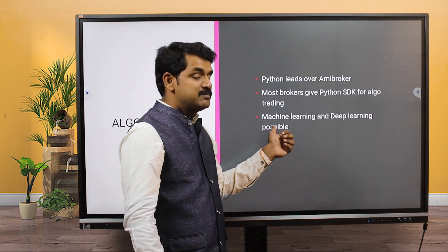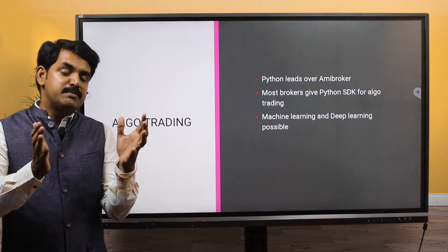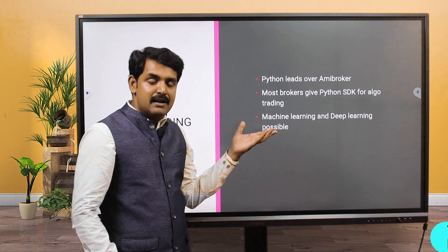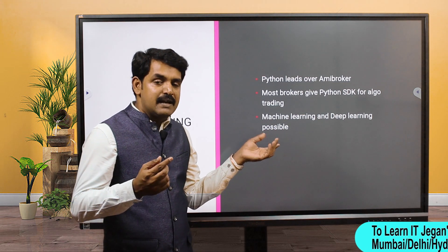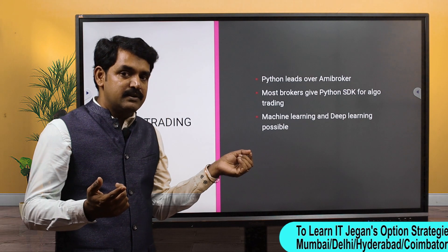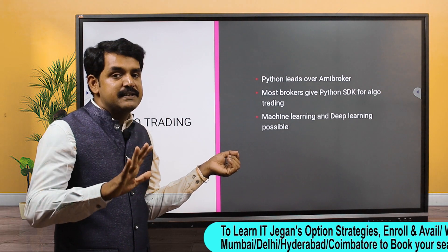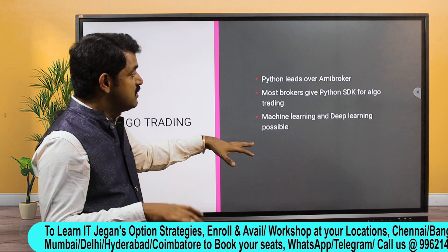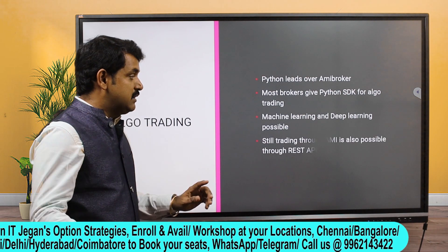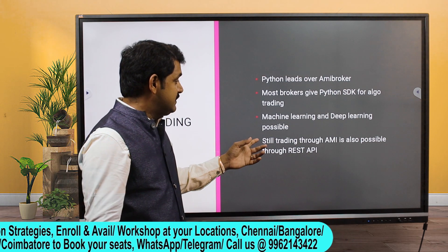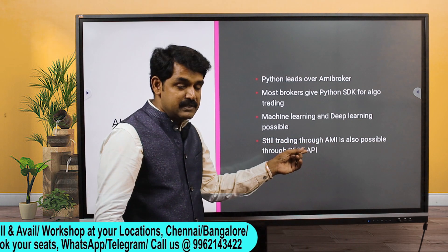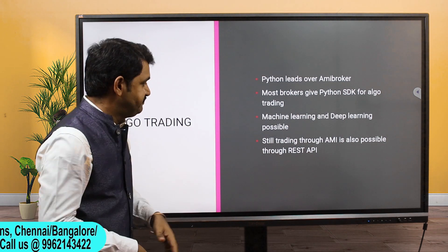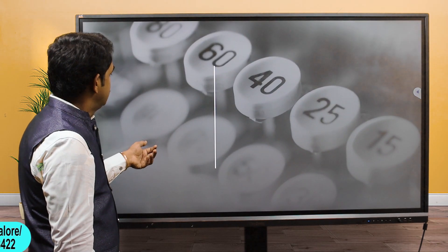Machine learning and deep learning are possible only with Python - not with AmiBoker, because AmiBoker does not have those libraries. Python has a full list of libraries for machine learning and deep learning, which I'll explain in a separate video. Assume it means artificial intelligence and automatic learning - these are possible only with Python. Trading through AmiBoker via REST API is also possible, but you need to write your own code and it gets really complicated.